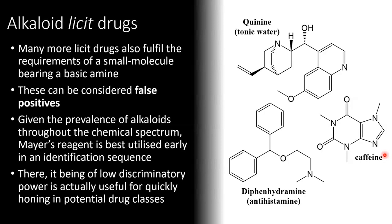If we look at the examples on the right we can see quinine, which is present in tonic water, caffeine, which we're all familiar with, and diphenhydramine, which is a common antihistamine compound found in Benadryl. Given the prevalence of alkaloids throughout chemistry, Mayer's Reagent is best utilized early in an identification sequence. There, the fact that it has low discriminatory power is actually useful for quickly honing in on what the potential drug class could be for a generic white powder found at a crime scene.